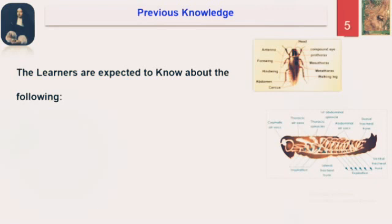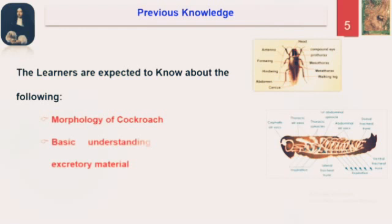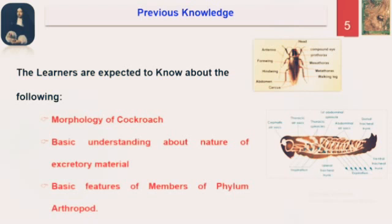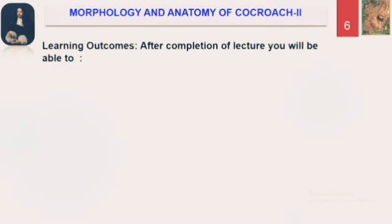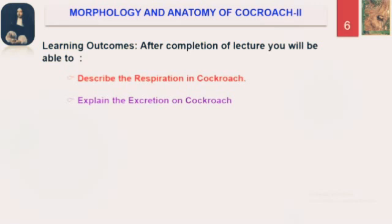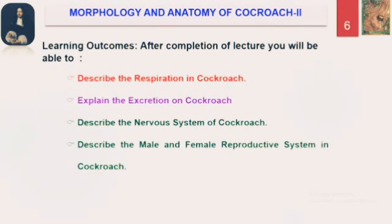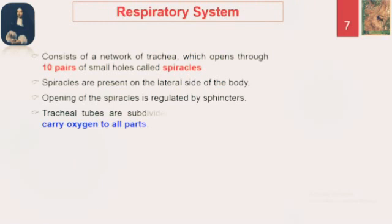What you are expected to know before we start the lecture: morphology of cockroach, basic understanding about the nature of excretory material in cockroach, and basic features of the members of phylum Arthropoda. That will help you understand the conceptual details. The learning outcomes: you will be able to describe respiration in cockroach, explain excretion in cockroach, describe the nervous system, and describe the male and female reproductive systems along with the life cycle.